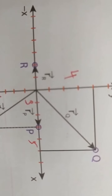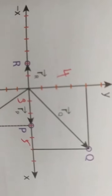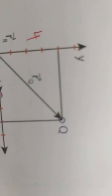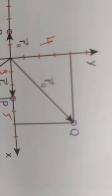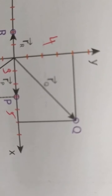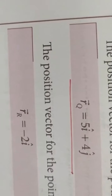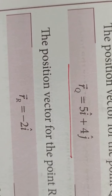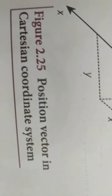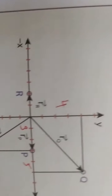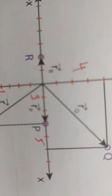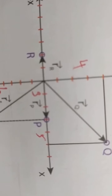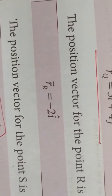For point Q, you project the line on the x-axis and y-axis. On the x-axis it meets at 5 and on the y-axis at 4. So rQ vector equals 5 i-cap plus 4 j-cap. Similarly, for point R, it is on the x-axis alone, so no need to mention j-cap and k-cap. rR vector equals minus 2 i-cap.